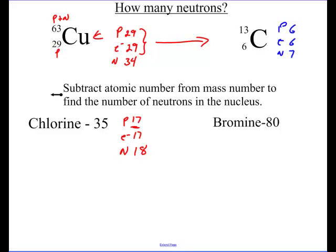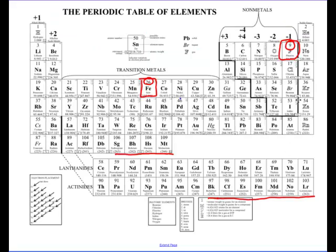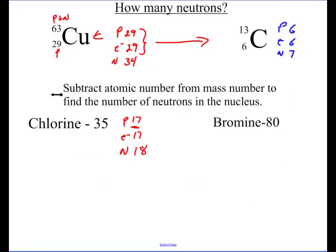Pause the video and try the same thing with bromine. Bromine is element 35 over here on the periodic table. So: how many protons? 35. Electrons? 35. And then neutrons? 80 minus 35 is 45. So that's how you find the number of neutrons — it's a pretty simple thing that just involves subtraction.